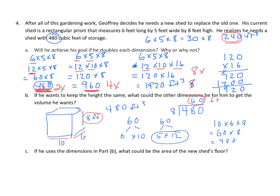There's more than one possible answer. If he uses the dimensions from Part B, what could the area of the new shed's floor be? We've already determined that. Using the formula volume equals base times height, and knowing the height is 8, the base area has to be 60 square feet.